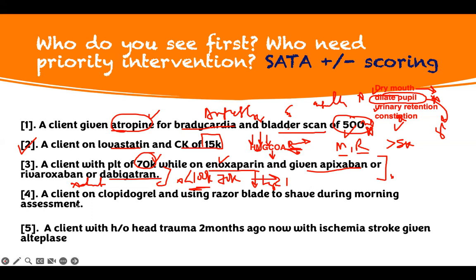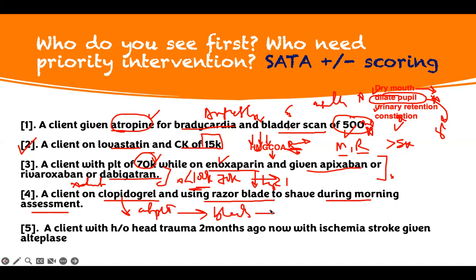A client on clopidogrel — an anti-platelet medication — using a razor blade to shave during morning assessment. You have to educate this patient. What is clopidogrel? It's an anti-platelet medication. If you're taking it, you have bleeding risks. You should use an electric shaver, not a razor blade. This patient is going to bleed. We need to see this patient.